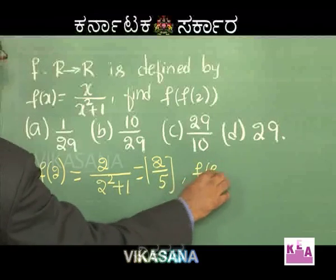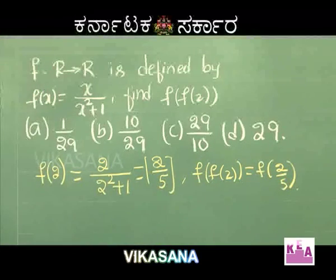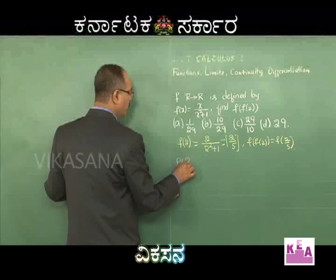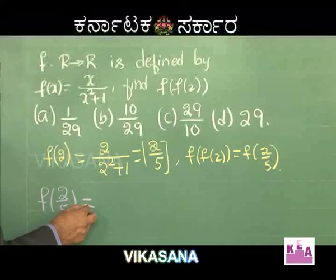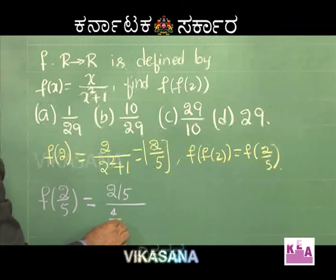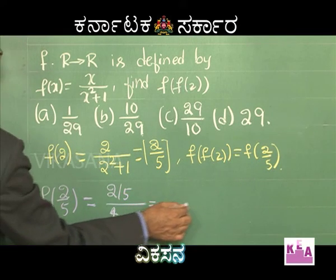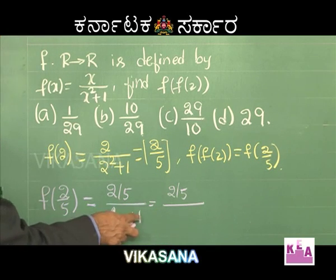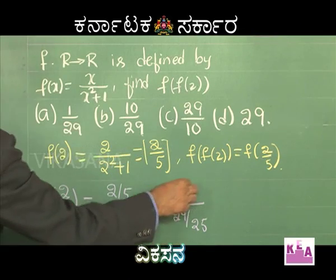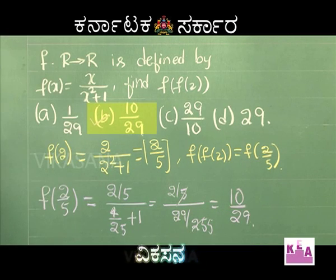Now f(f(2)) = f(2/5). Substituting x = 2/5: f(2/5) = (2/5) / ((2/5)² + 1) = (2/5) / (4/25 + 1). Taking LCM as 25: denominator = (4 + 25)/25 = 29/25. So f(2/5) = (2/5) × (25/29) = 10/29. Option b is correct.